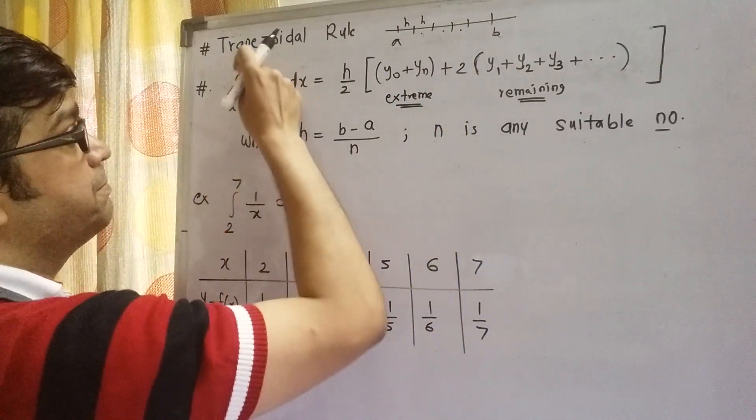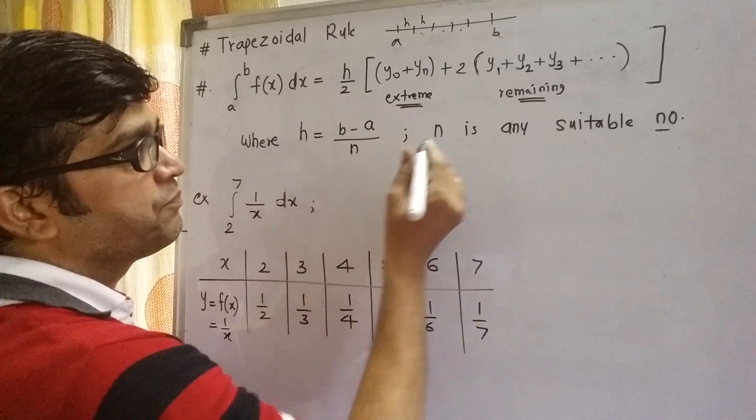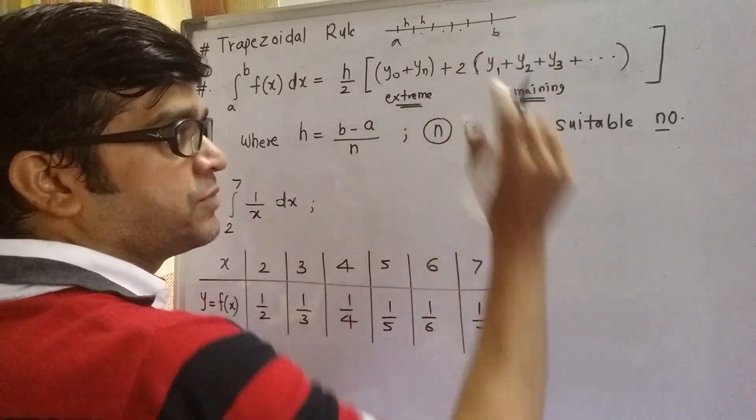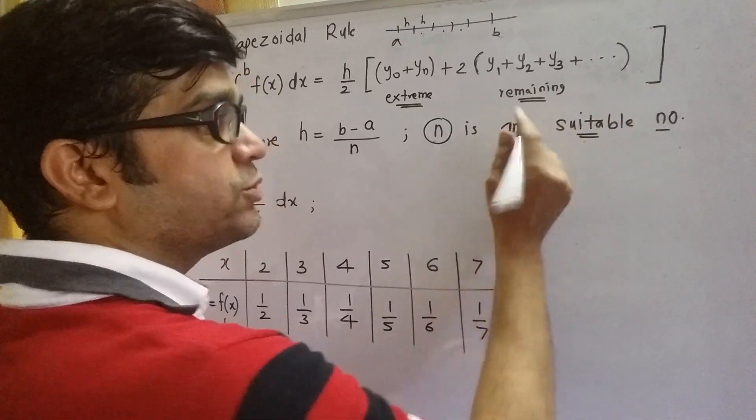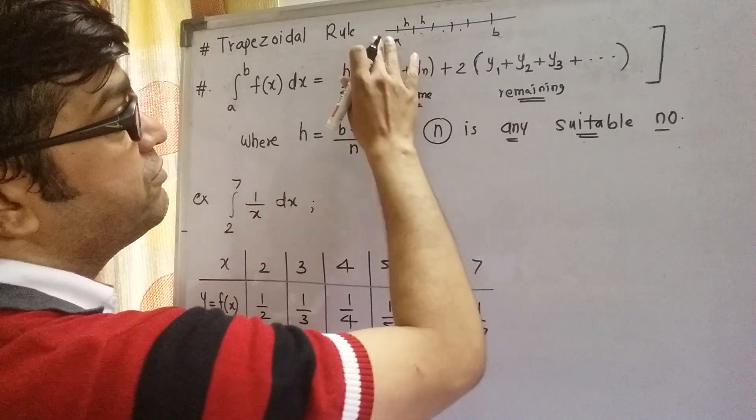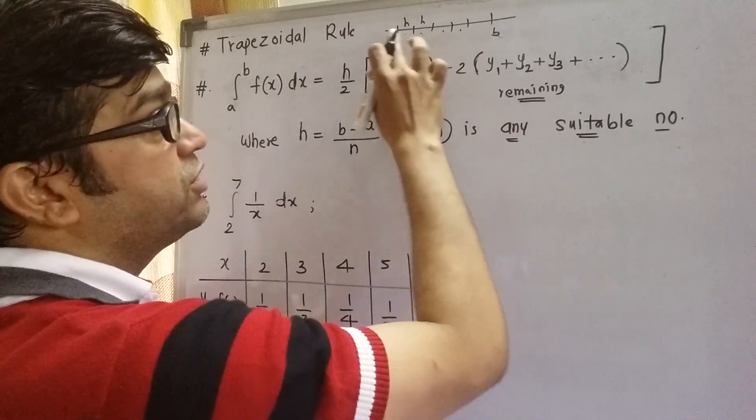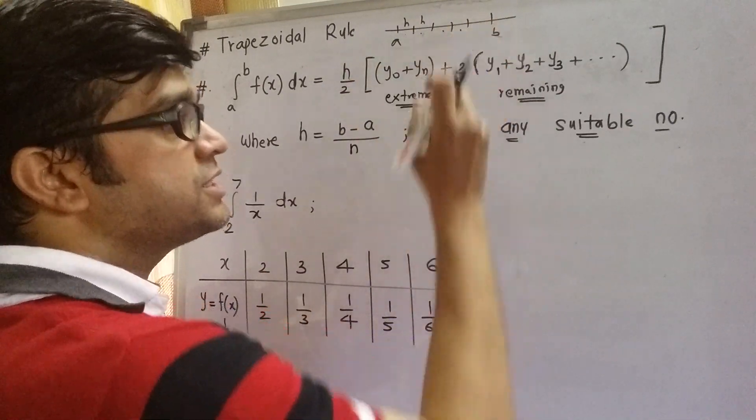This h is given by the formula b minus a divided by n, where this n indicates the number of sub-intervals. So it can be taken as any suitable number. If you divide this into, say, five sub-intervals, n will be five.